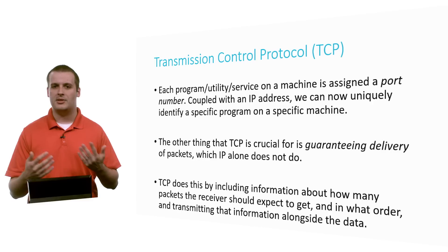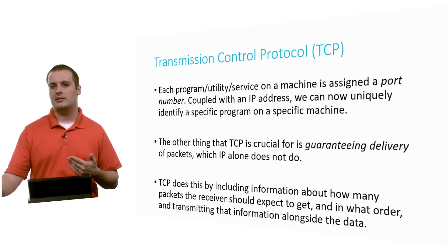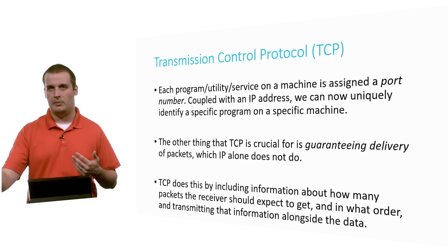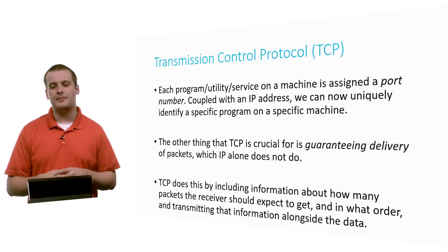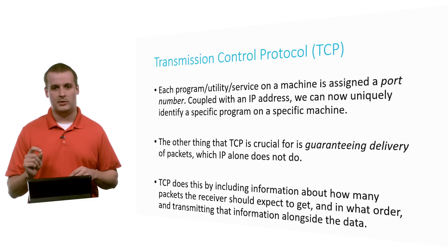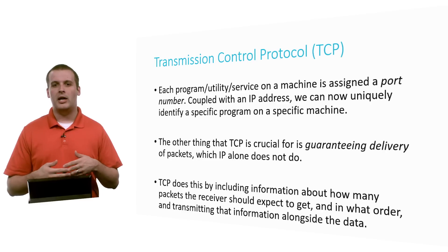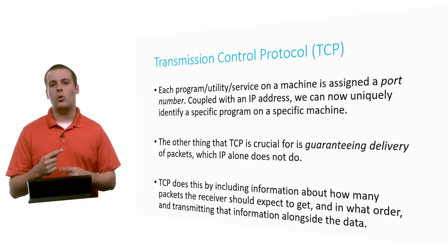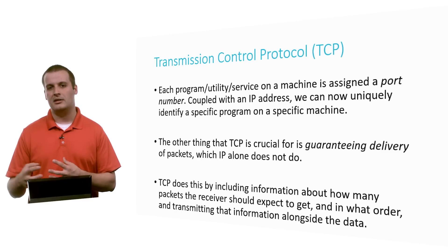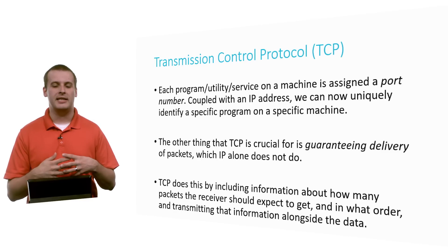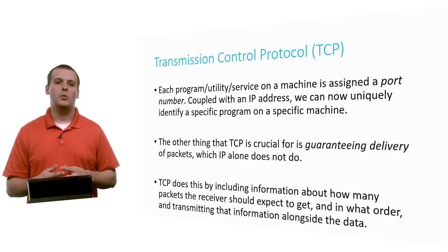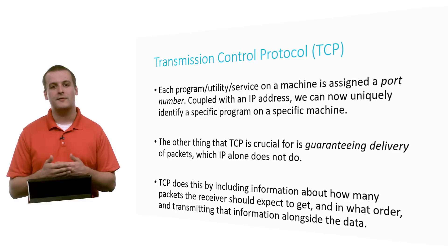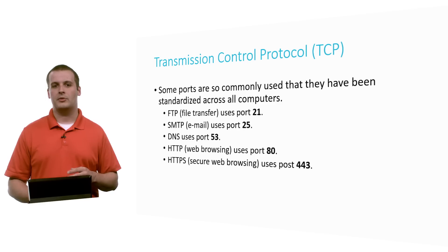That's why TCP and IP are so frequently interrelated, because a port number on its own doesn't really mean anything. You need a port number and the machine that you're talking about. The other thing that TCP does is guarantee delivery. In addition to specifying the port number, it also indicates how many packets IP has split the data into, and it orders those packets so they can be reconstructed on the receiving machine, even if they're received in a different order than they were sent — which can happen because IP is a connectionless protocol, so different packets can take different paths through the system.